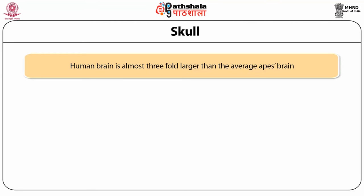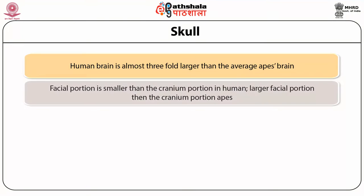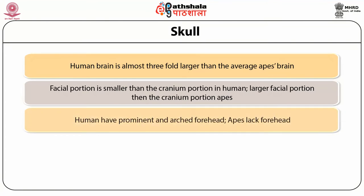To accommodate this large brain size, the human cranium becomes larger and more protruding. Consequently, the facial portion is reduced and becomes smaller than the cranial portion in humans. However, apes have a larger facial portion than the cranial portion. In humans, the face also becomes more vertical than that of apes. Humans have a more prominent and arched forehead, while apes lack a forehead. The frontal and parietal tuberosities are well marked in the human cranium compared to that of apes. The parietal bone is well arched and more protruding in humans compared to apes.